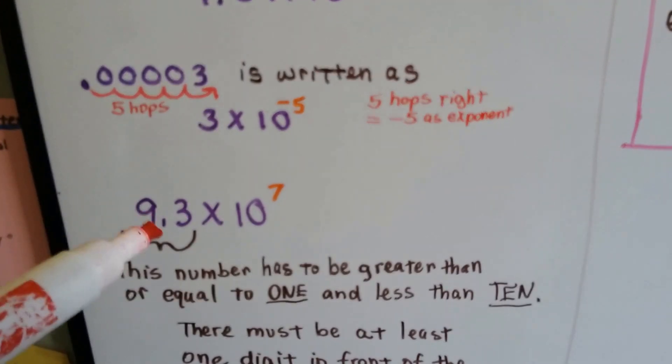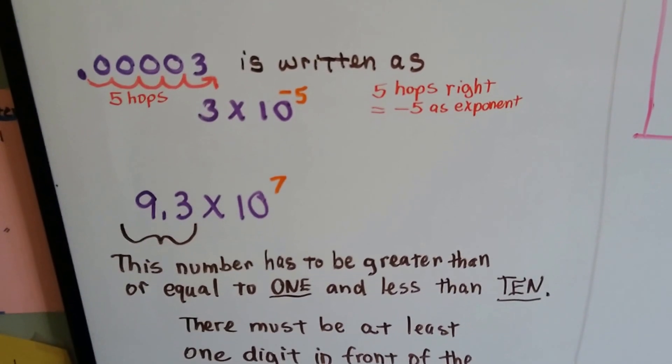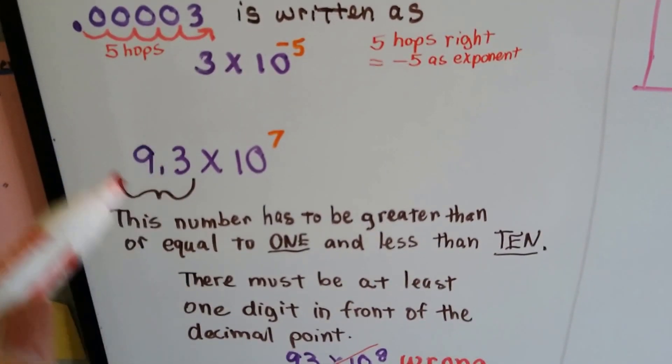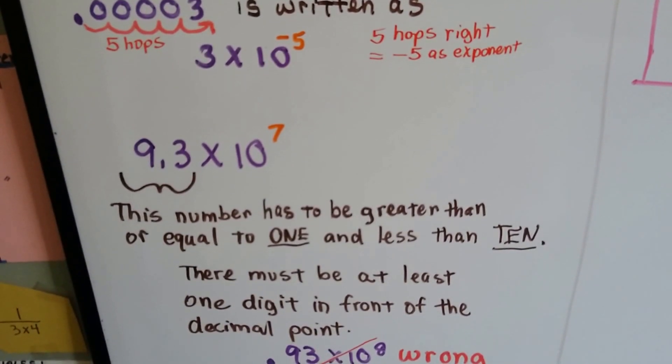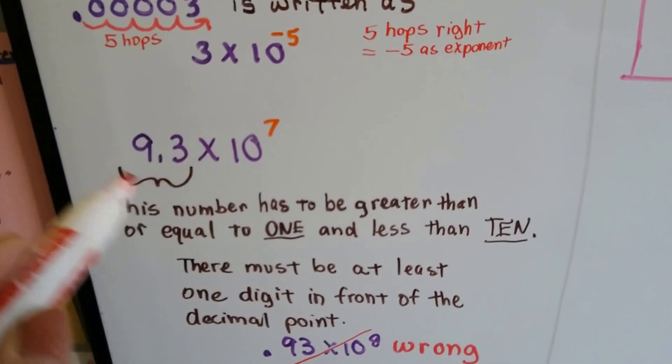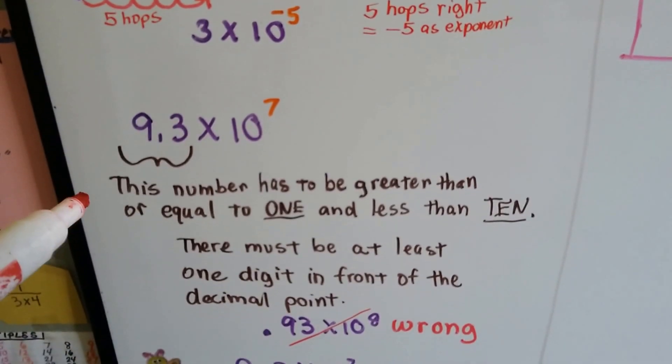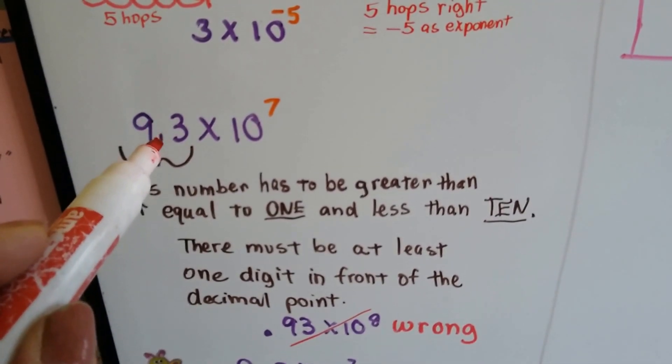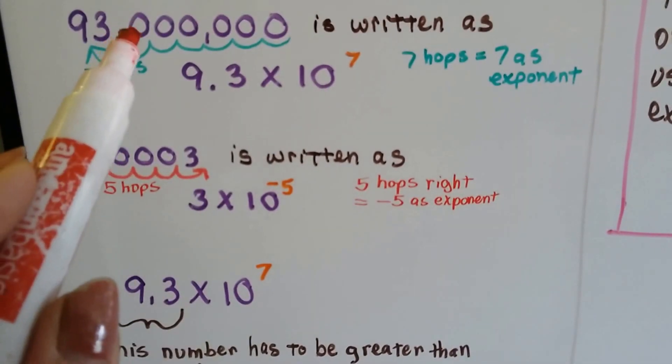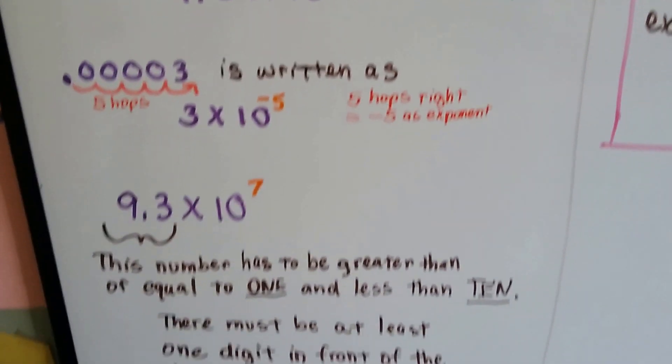When we see 9.3 times 10 to the 7th power, this 9.3 has to be greater than or equal to 1 and less than 10. That's what needs to go here. There must be at least one digit in front of the decimal point. That's why we put it between the 9 and the 3 when we did it from 93 million.